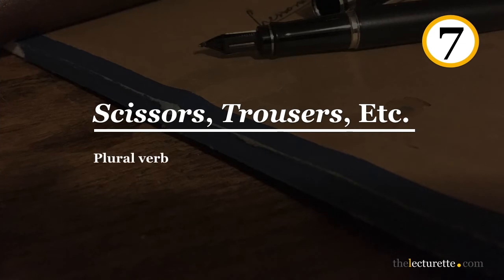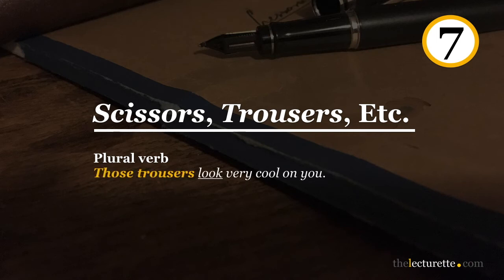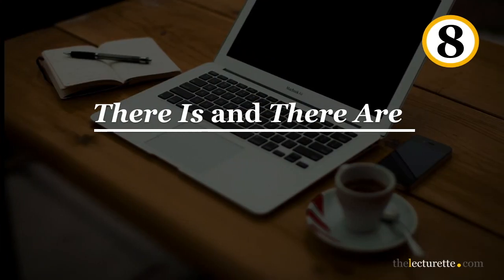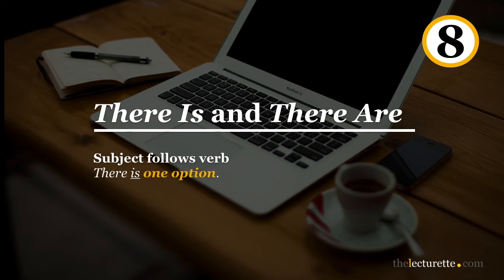Number seven: plural verbs are used for nouns like scissors, tweezers, trousers, etc. So: 'Those trousers look very cool on you.' Number eight: when using sentences beginning with 'there is' or 'there are,' make sure the subject follows the verb. So: 'There is one option.' And: 'There are many possibilities.'